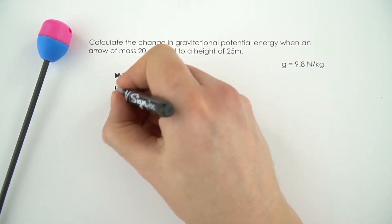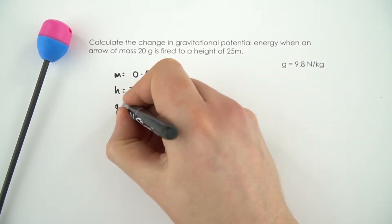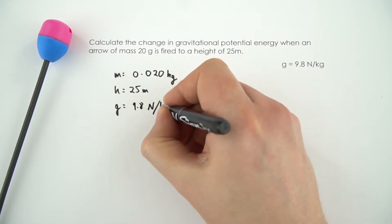It says that the height is 25 meters. And finally the value of g is equal to 9.8 newtons per kilogram.